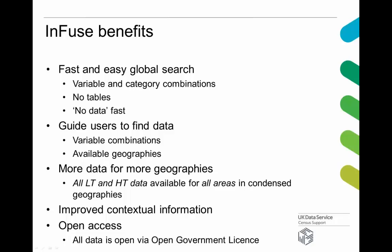We've also done some work — because of the way in which we've managed the data — that allowed us to spot gaps in the data. We've produced additional aggregated counts for some of the areas which the agencies seem to have forgotten in their data production. We've also done work to make lower threshold and higher threshold data available for all the areas in the condensed geography layers. Because we can tie metadata in with the data in the same model, it allows us to provide and understand the data a lot better and make appropriate use of it.